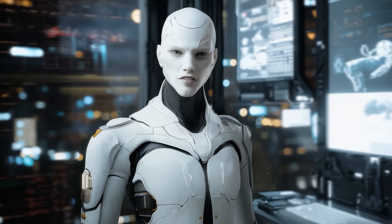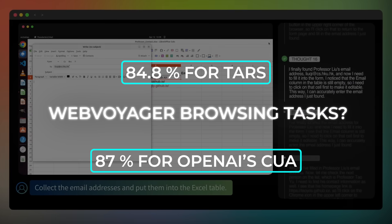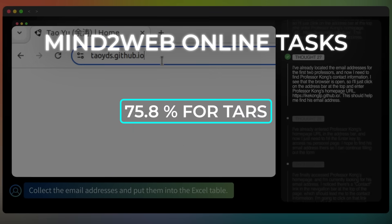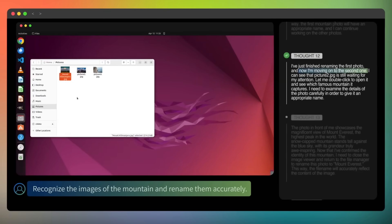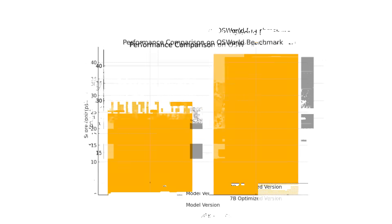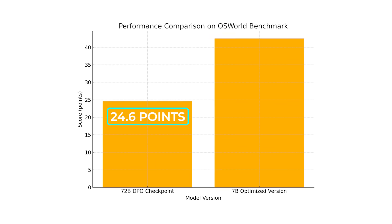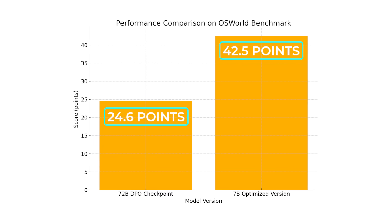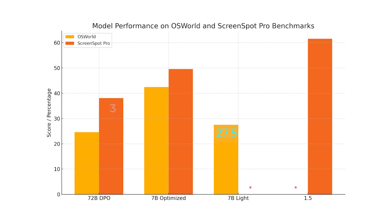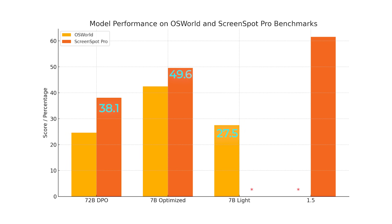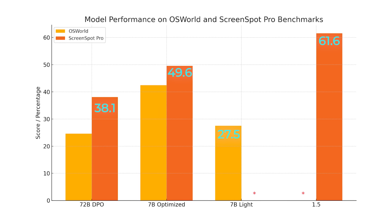To prove it's not just cherry-picked demos, they published the full benchmark table in the blog. Web Voyager browsing tasks: 84.8% for UITARS versus 87% for CUA — marginal. Mind2Web online tasks: 75.8% against 71% for OpenAI's CUA. Notice the pattern: on web browsing, Operator stays competitive, but once you leave HTML land — especially once you hit desktop or mobile — UITARS pulls ahead. Scale tests are neat too: the original 72B DPO checkpoint on OS World gets 24.6 points, the mid-sized 7B version reaches 42.5 points because it's optimized for desktop tasks. The tiny 7B Lite clocks 27.5. On ScreenSpot Pro: 38.1% for the earlier 72B DPO, 49.6% for the new 7B, 61.6% for the full 1.5. Bigger isn't always better — targeted data and the thought engine matter more than raw parameters for grounding.